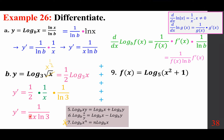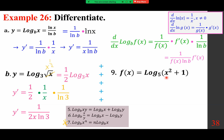For log base 5 of (x squared plus 1): first, can we simplify? No — it's extremely important to recognize we cannot separate this log further. We differentiate: flip over to get 1 over (x squared plus 1), then by the chain rule the derivative of the inside is 2x, and since the base is not e, multiply by 1 over ln 5.